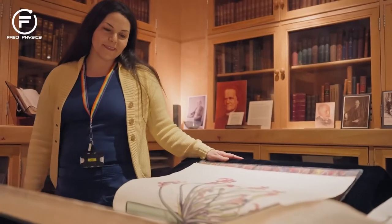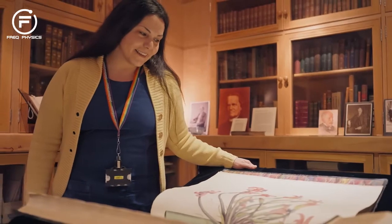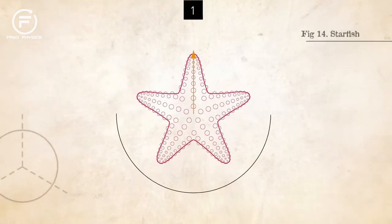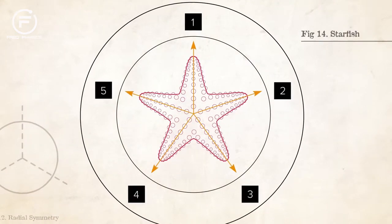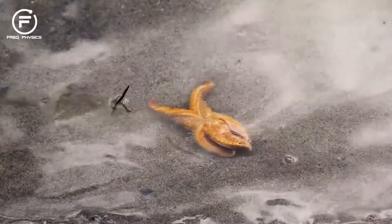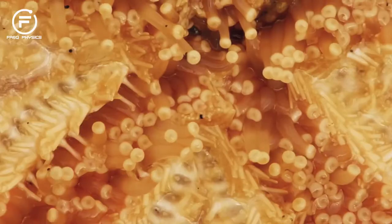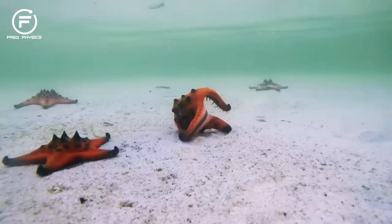With radial symmetry, you cannot identify a left or right side, or up and down. Radial symmetry was the first to evolve — for instance, starfish. We can easily divide their body at least five times into identical halves. It was important for them to have these geometric features in order to promptly react to stimuli coming from all over their environment.